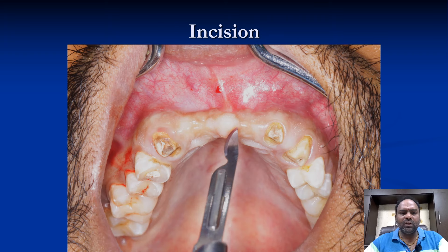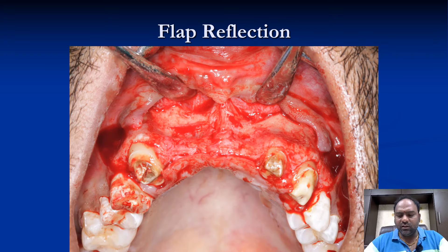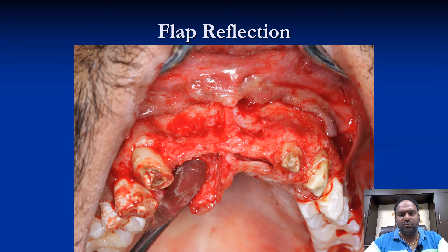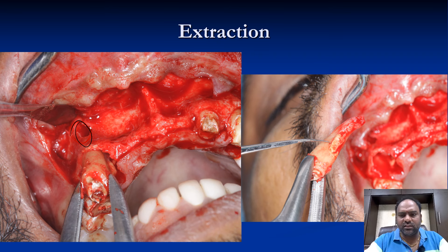We made the incision and performed the extractions. You can appreciate the length and width of the bone present here — only about 1 mm thickness of bone was there. After extraction, there was also some amount of dehiscence present, and fenestrations were noted as well.